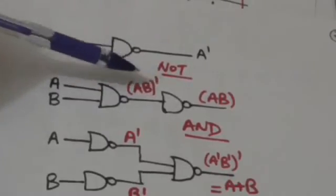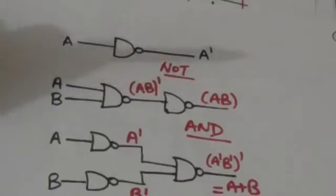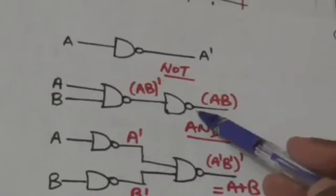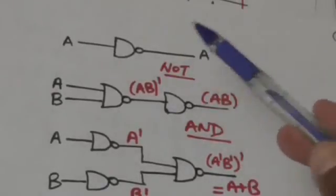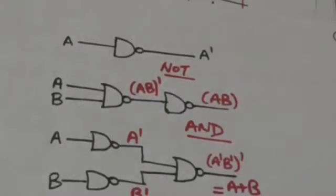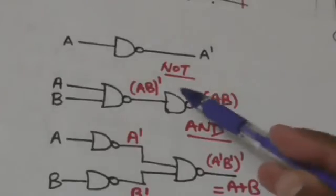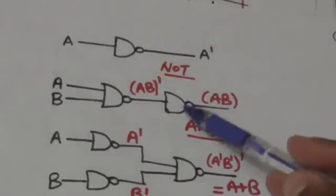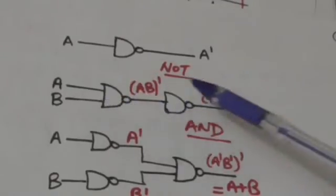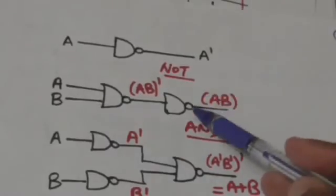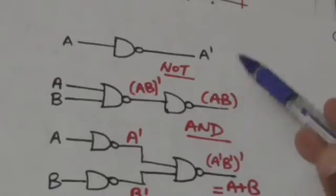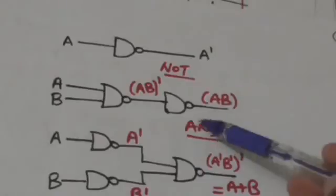The output of the second NAND gate is the complement of the complement of A and B, which equals A and B. So it performs AND operation. This circuit, made up of NAND gates, performs the logical AND operation, so we can implement AND operation by NAND gates.